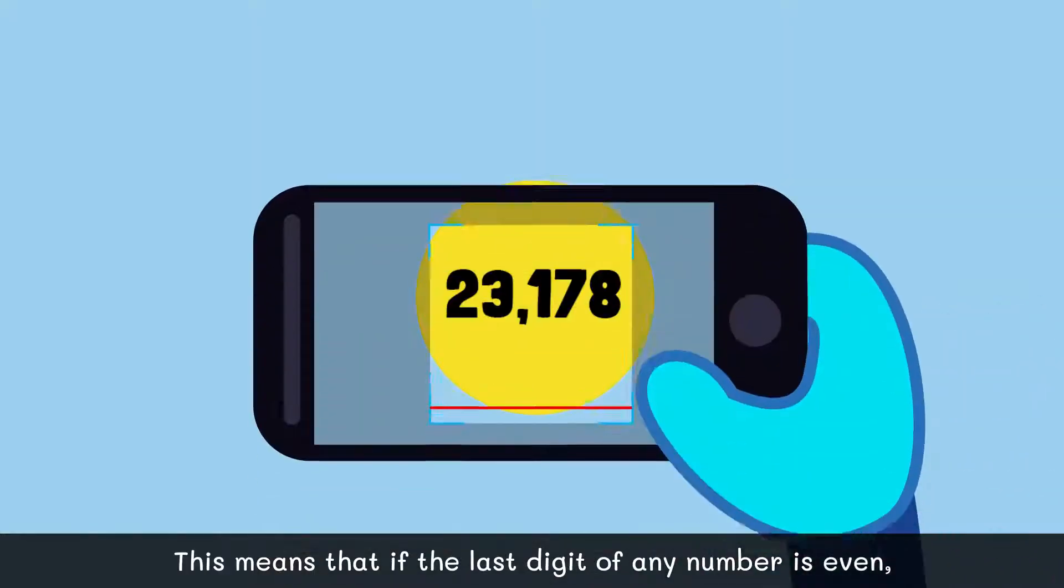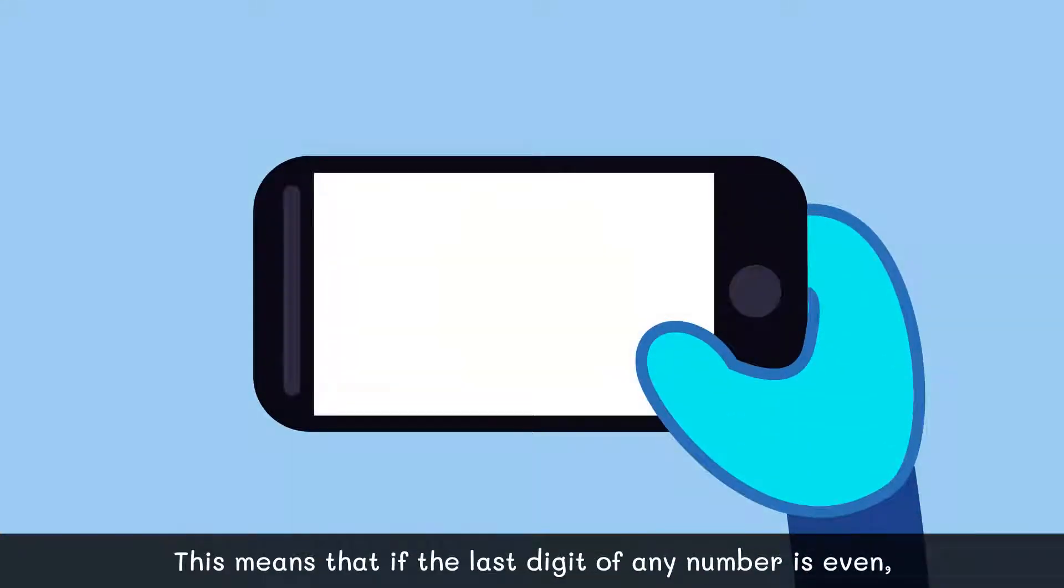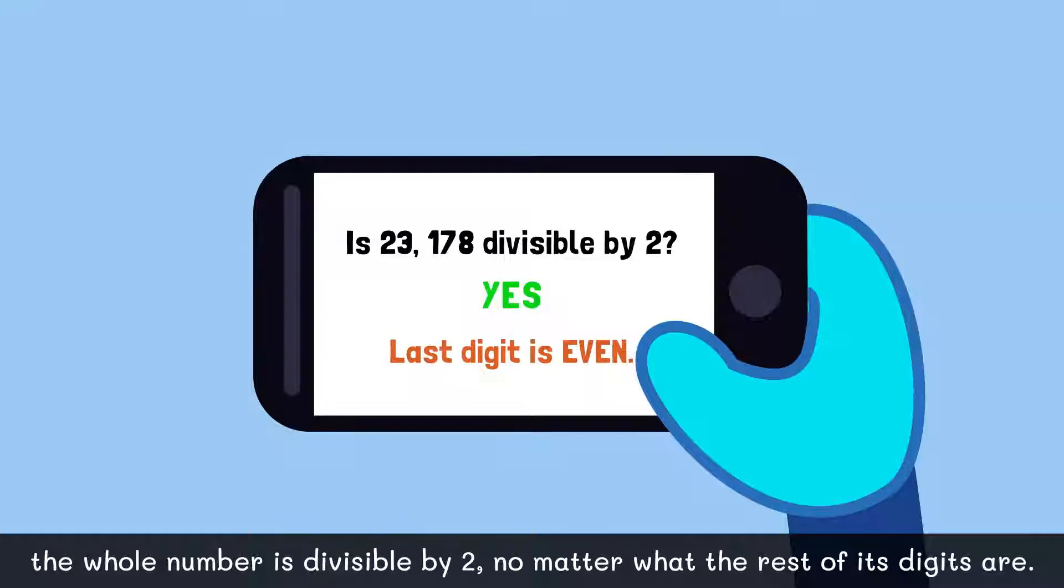This means that if the last digit of any number is even, the whole number is divisible by 2, no matter what the rest of its digits are.